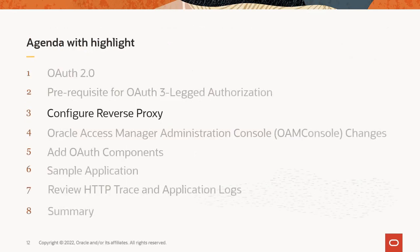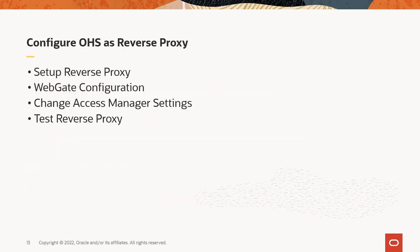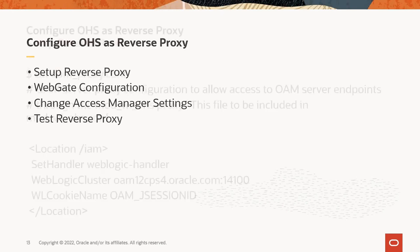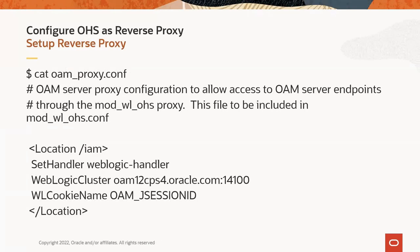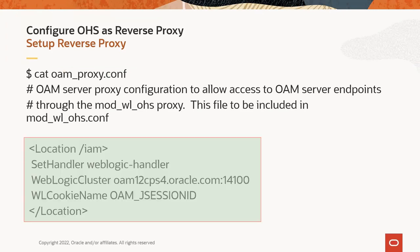Subsequent slides will walk through steps to configure the reverse proxy. Subtopics for this section are: set up reverse proxy, webgate configuration, change access manager settings, and test the new reverse proxy. To configure OHS as a reverse proxy, add a file to the temp folder. You could name this file appropriately — we'll call it oam-proxy.conf. You can see part of its content on the slide. Edit the file to add more locations as shown in the next slide.